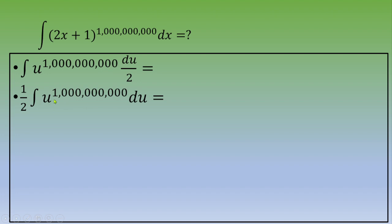You know that an antiderivative of u to the power 1 billion is u to the power 1 billion and 1, over 1 billion and 1. So you multiply by 1 over 2, and don't forget to add C, a constant number at the end, because this is an indefinite integral.